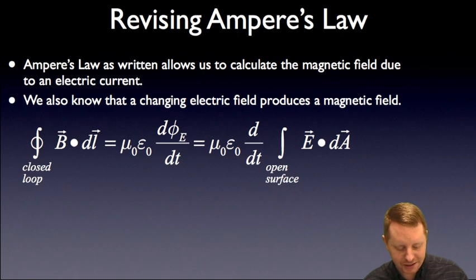So as we talk about revising Ampere's law, as written it allows us to calculate the magnetic field due to an electric current. But we also know that a changing electric field produces a magnetic field. We haven't taken that into account yet.